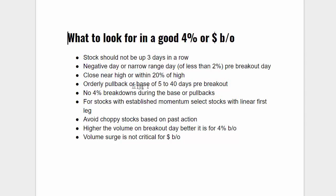An orderly pullback or base of 5 to 40 days pre-breakout — you want something which has a base from which it is breaking out. No 4% breakdown during the base or pullback. If you have too many breakdowns during the pullback or base, there is distribution, so you want to avoid that.